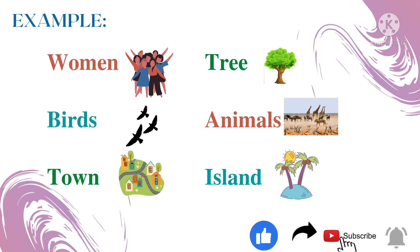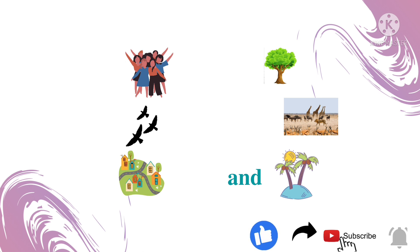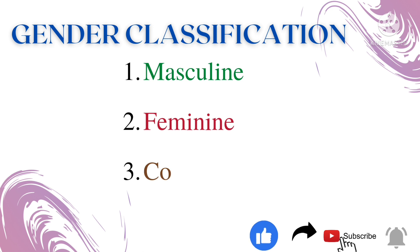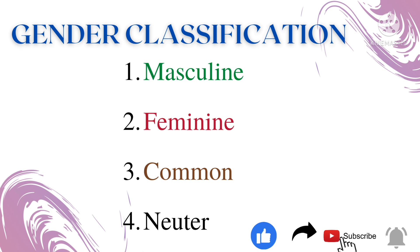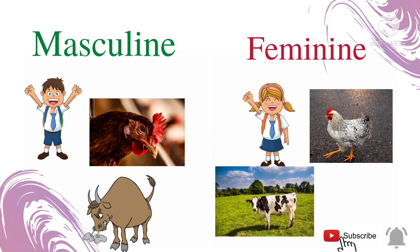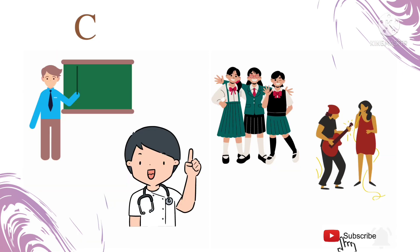Let's see the classification of genders. We have masculine gender, feminine gender, common gender, and neuter gender. Using exact common nouns in a description makes your sentences more clear and correct. For masculine and feminine gender, look at this example: boy, cop, and bull are the male gender; girl, hen, and cow are the female gender.